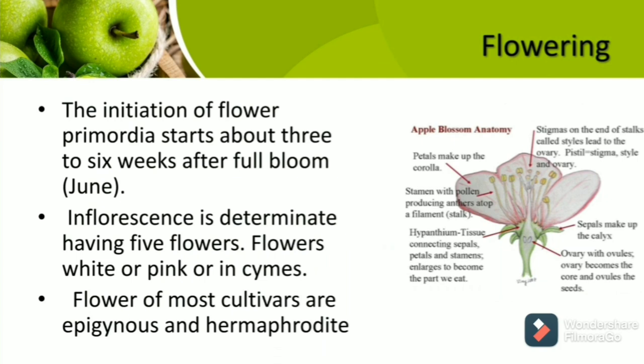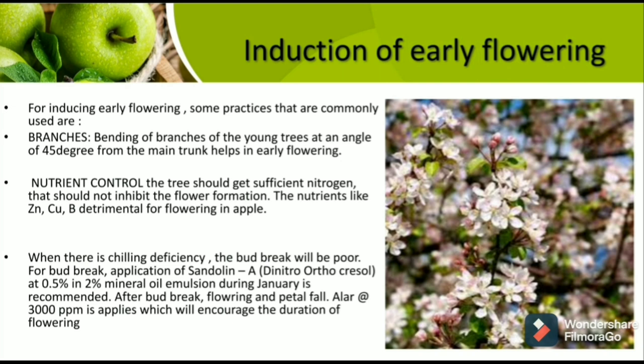Regarding flowering and early flowering induction: The initiation of flower primordia starts about 3 to 6 weeks after full bloom, i.e. in June. Inflorescence is determinate, having 5 flowers. Flowers of most cultivars are epigynous and hermaphrodite. Induction of early flowering includes bending branches of young trees at an angle of 45 degrees from the main trunk to help in early flowering. Nutrient-controlled trees should get sufficient nitrogen so as not to inhibit flower formation. When there is chilling deficiency, bud break will be poor. For bud break, application of dinitro-orthocresol at 0.5% and 2% in mineral oil during January is recommended.